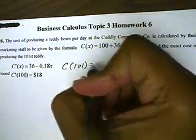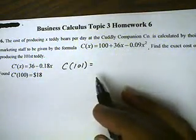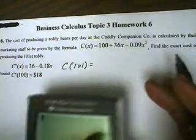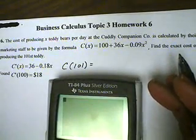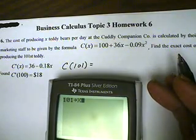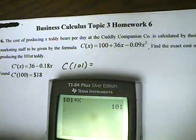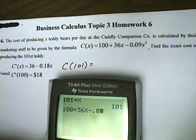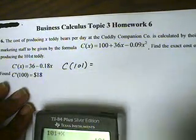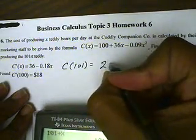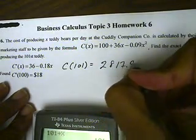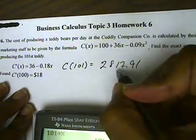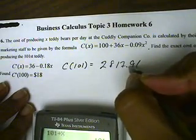So, the exact cost to make 101 teddy bears. Let's take our calculators and type 101 and store that into x. Then we're going to type in our equation, the cost function: 100 plus 36x minus 0.09x squared. So that's going to be $2,817.91.